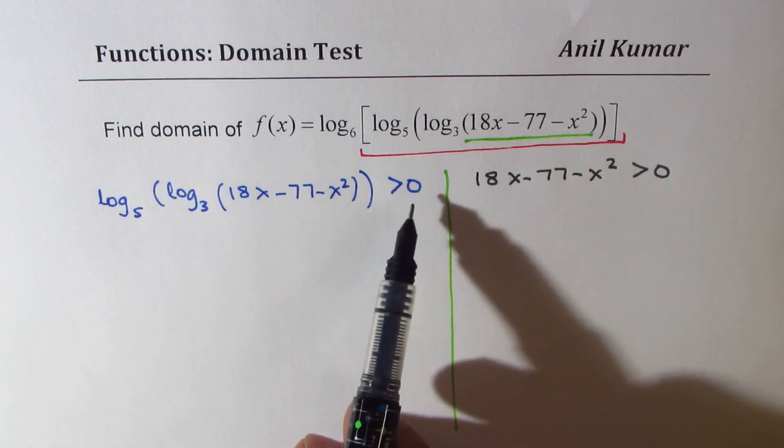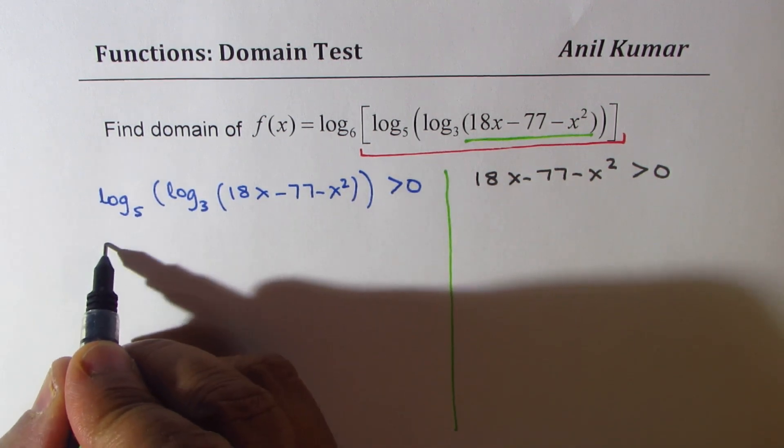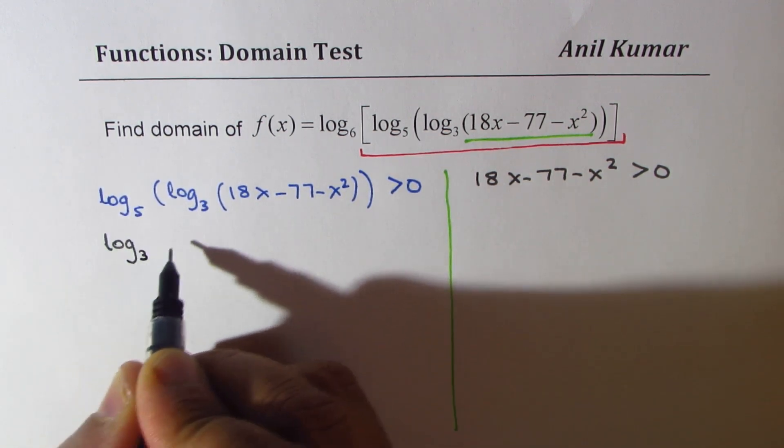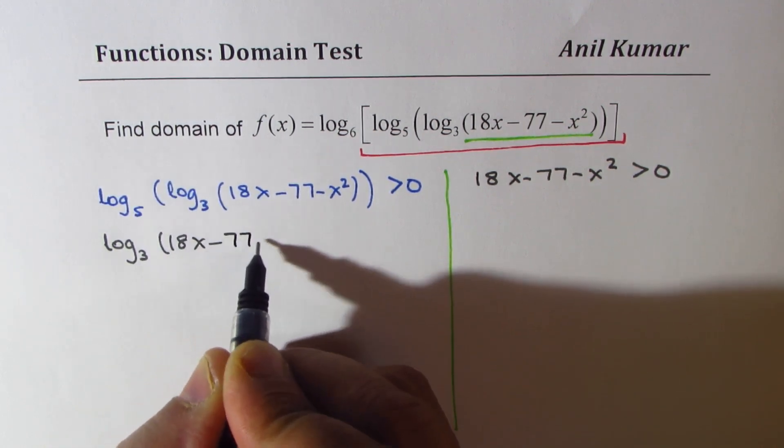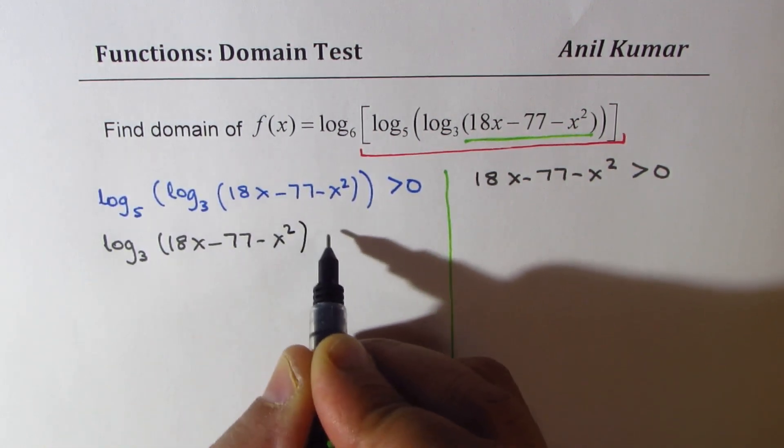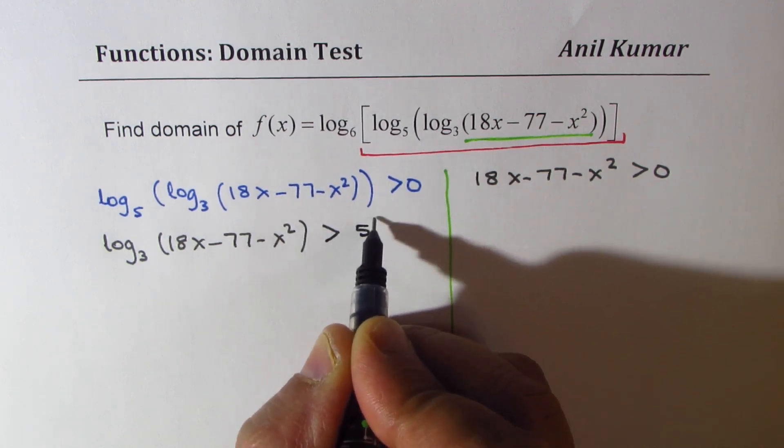So we can write this as 5 to the power of 0 there. So we could rewrite this as log base 3 of 18x minus 77 minus x squared should be greater than 5 to the power of 0.